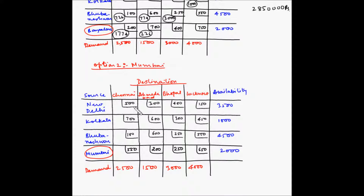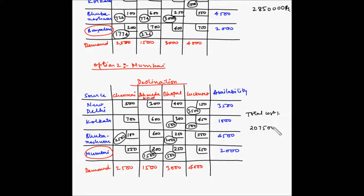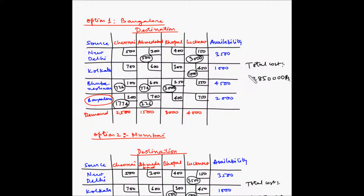For Option 2 (Mumbai), the allocations are: 3500 units from New Delhi to Lucknow, 500 from Kolkata to Bhopal, 500 from Kolkata to Lucknow, 2500 from Bhubneshwar to Chennai, 2000 from Bhubneshwar to Bhopal, 1500 from Mumbai to Ahmedabad, and 500 from Mumbai to Bhopal. The total cost of transportation for Option 2 comes out to ₹2,075,000.